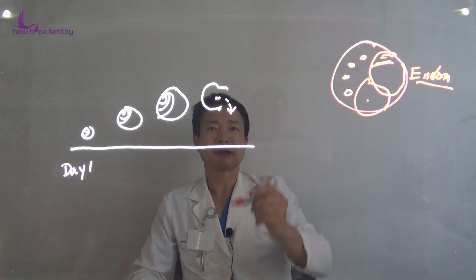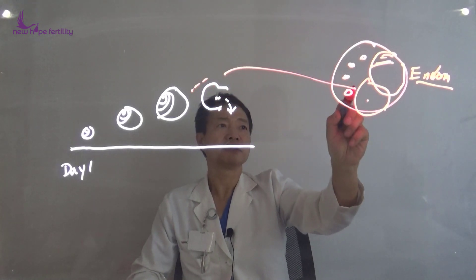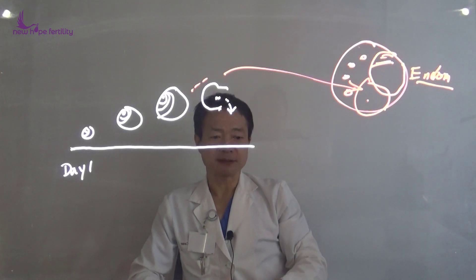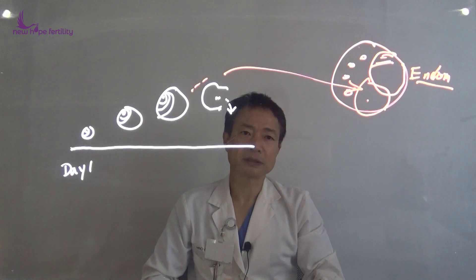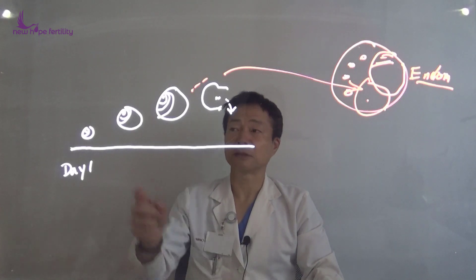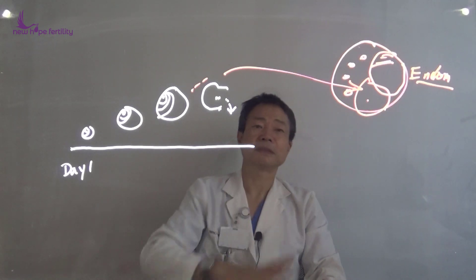Sometimes the follicles fail to ovulate and they continue to grow, and they become cysts. So in one kind of scenario, the cysts are very common. Usually when a lady is going through a drug cycle to produce more eggs, some small follicles for many different reasons do not ovulate properly and they become cysts.